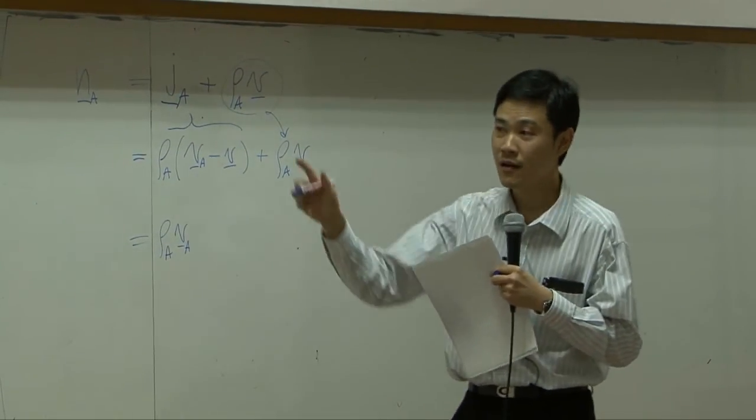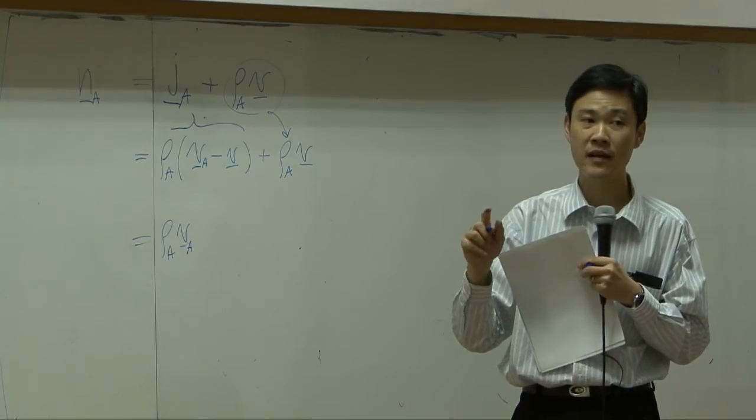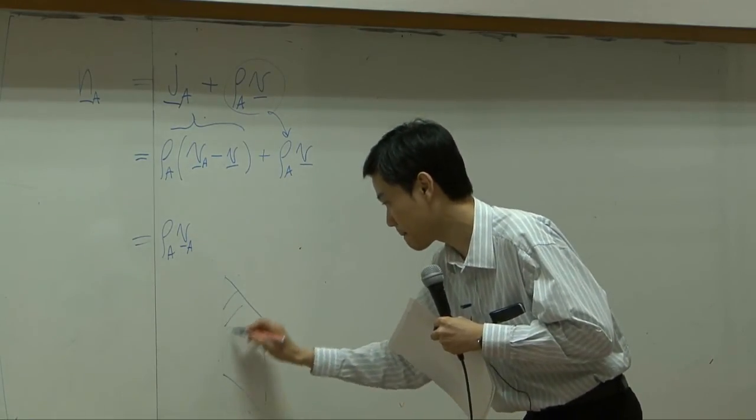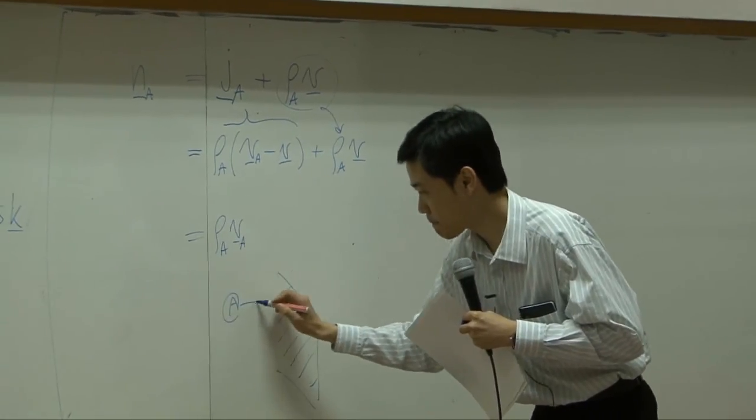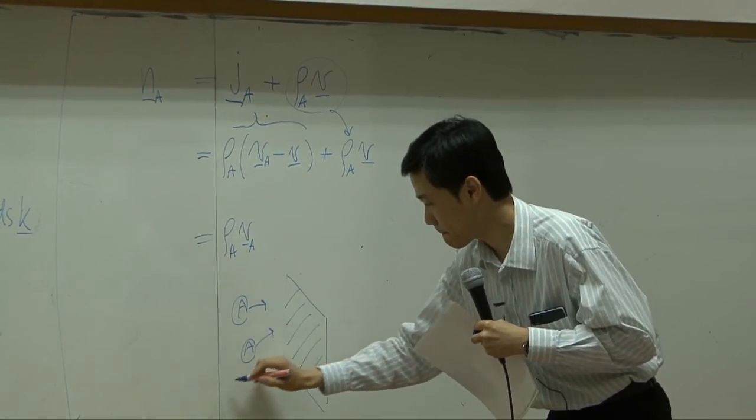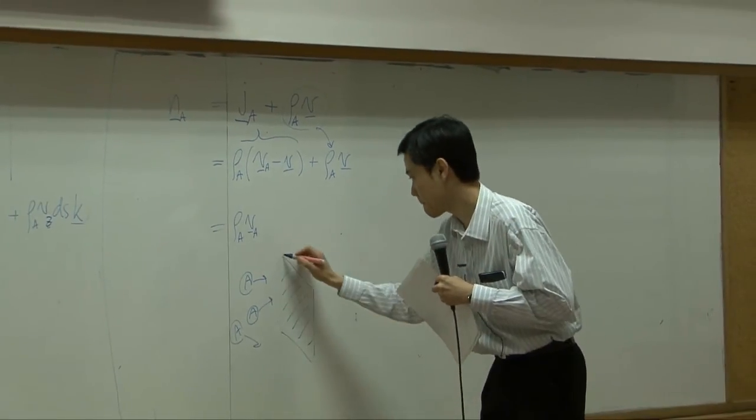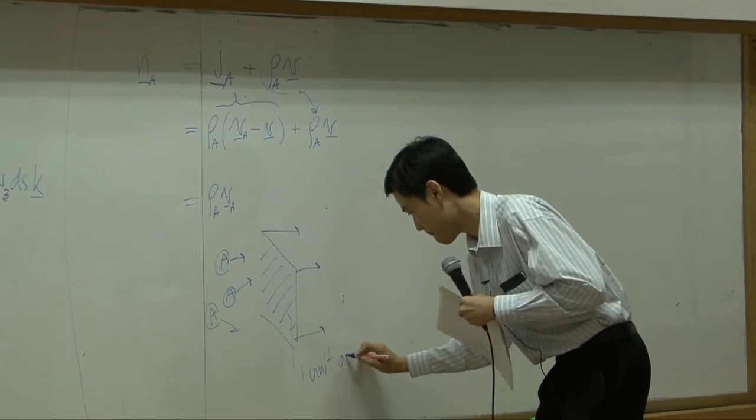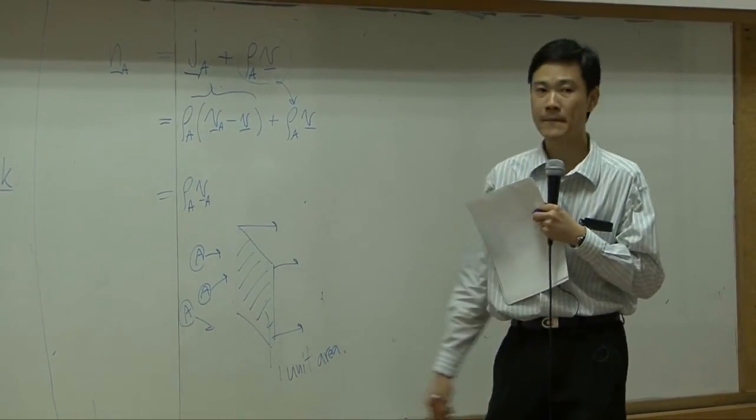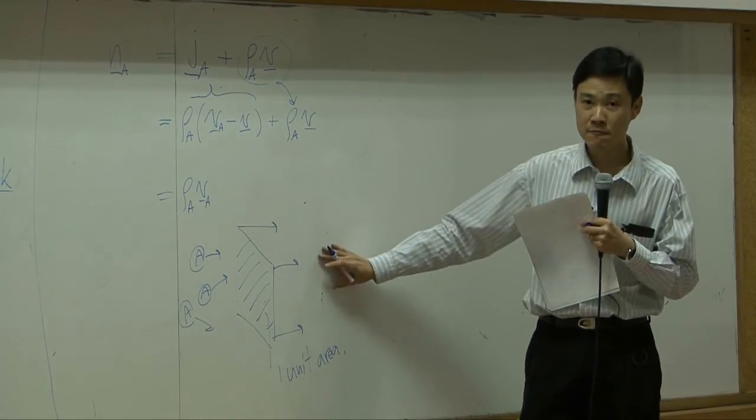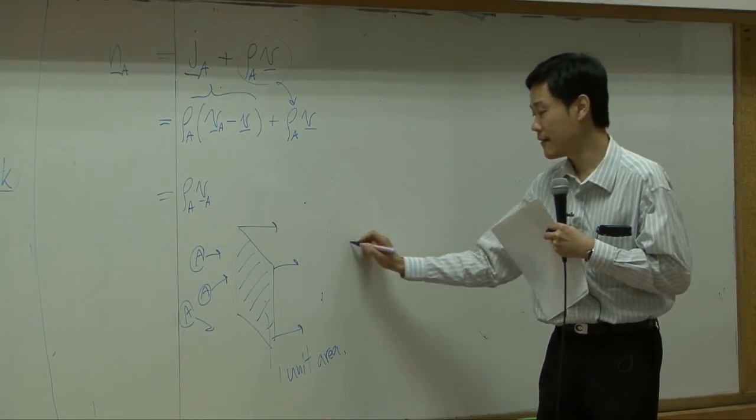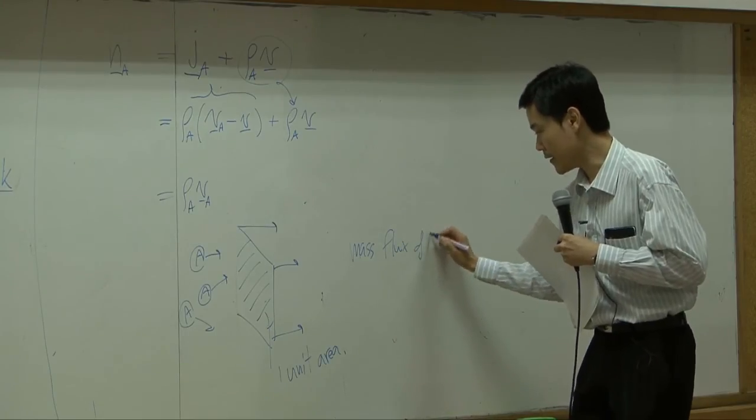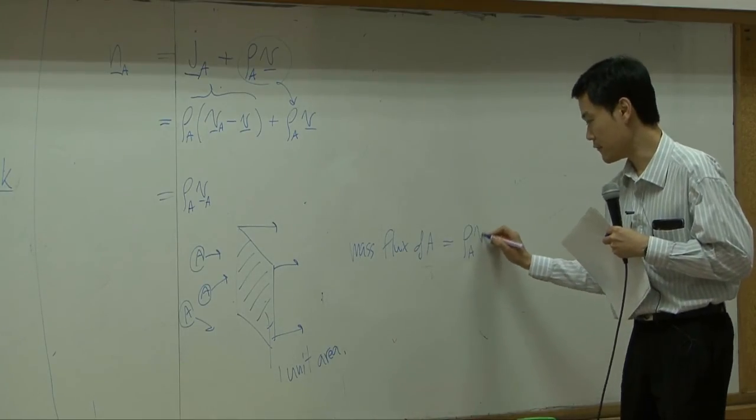Okay? So if you remember earlier, at the very beginning of the class, I draw this picture. Right? When I drew this picture, I told you that mass flux of A should equal to rho A V A.